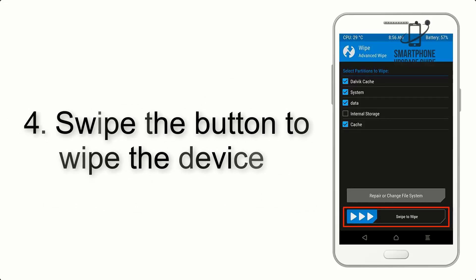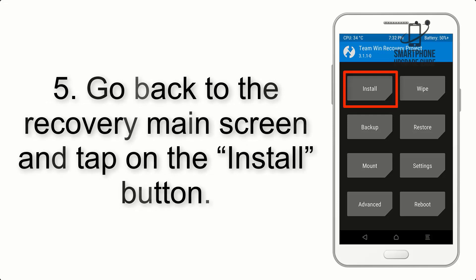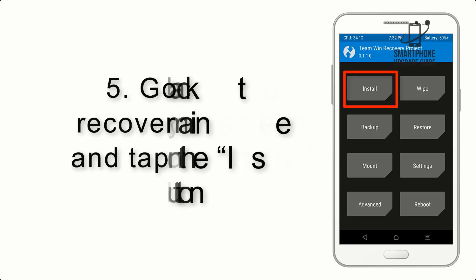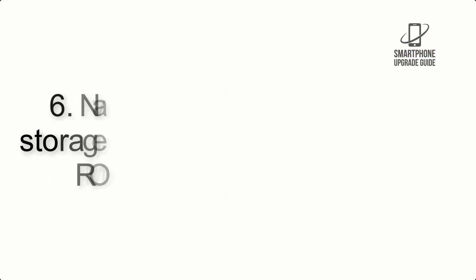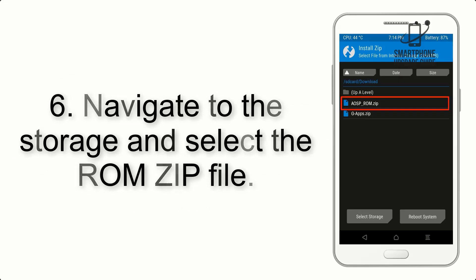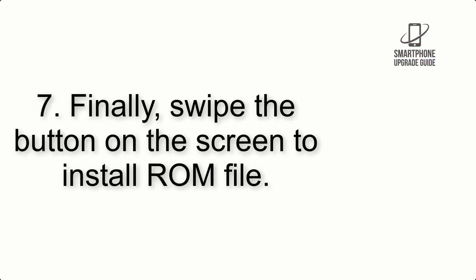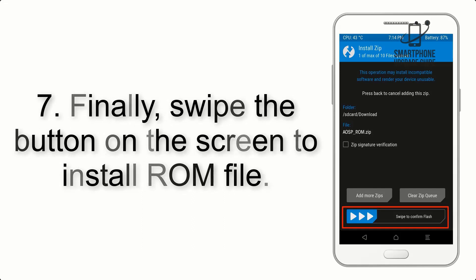Step 4: Swipe the button to wipe the device. Step 5: Go back to the recovery main screen and tap on the Install button. Step 6: Navigate to the storage and select the ROM zip file.